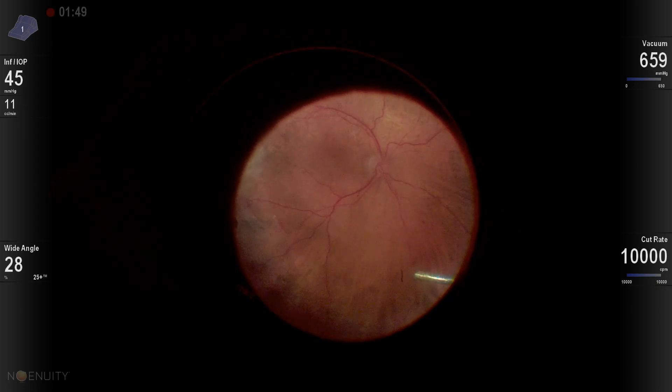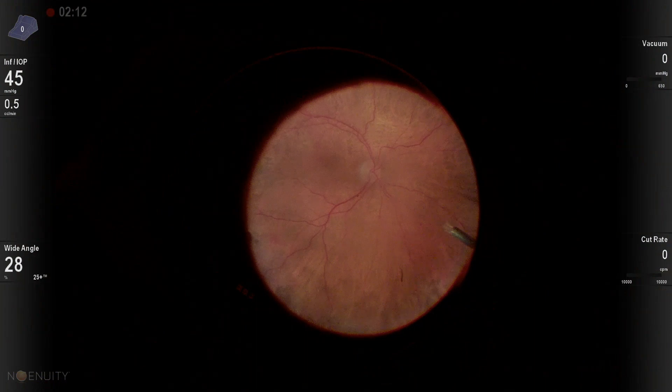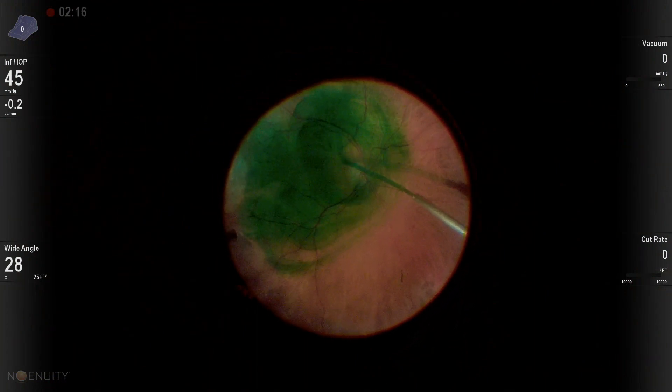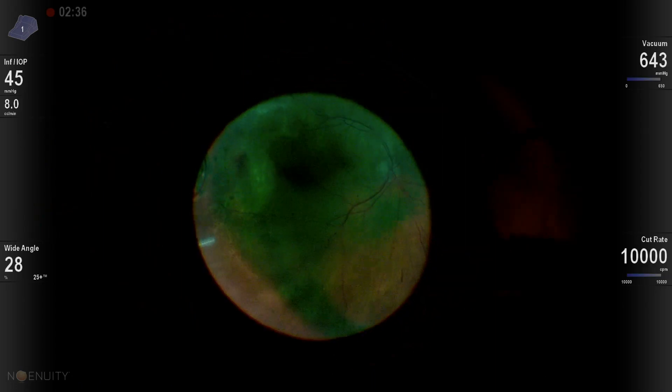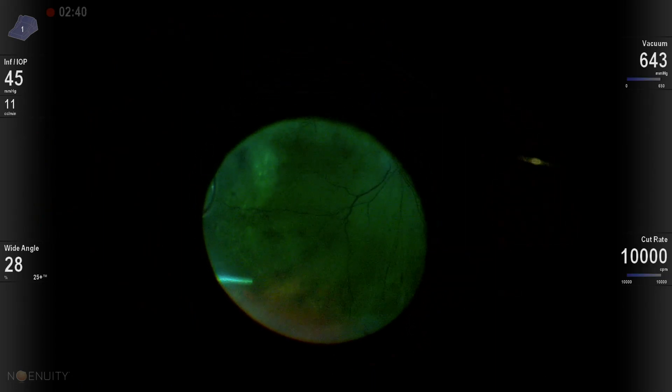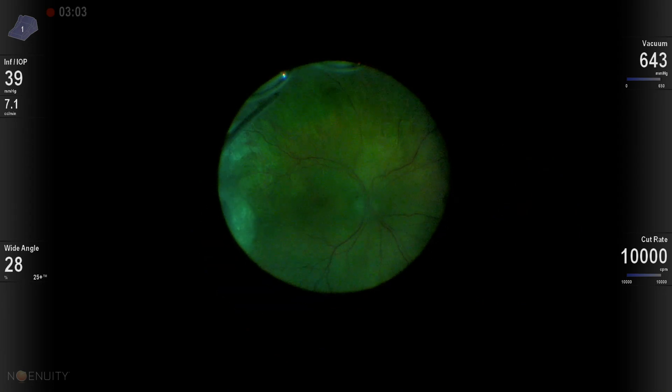This is an example of using the Alcon Flex Loop to help with an epiretinal membrane peel. I like to stain with ICG for epiretinal membranes because it's important to get the internal membrane underneath or behind the epiretinal membrane to prevent recurrence.